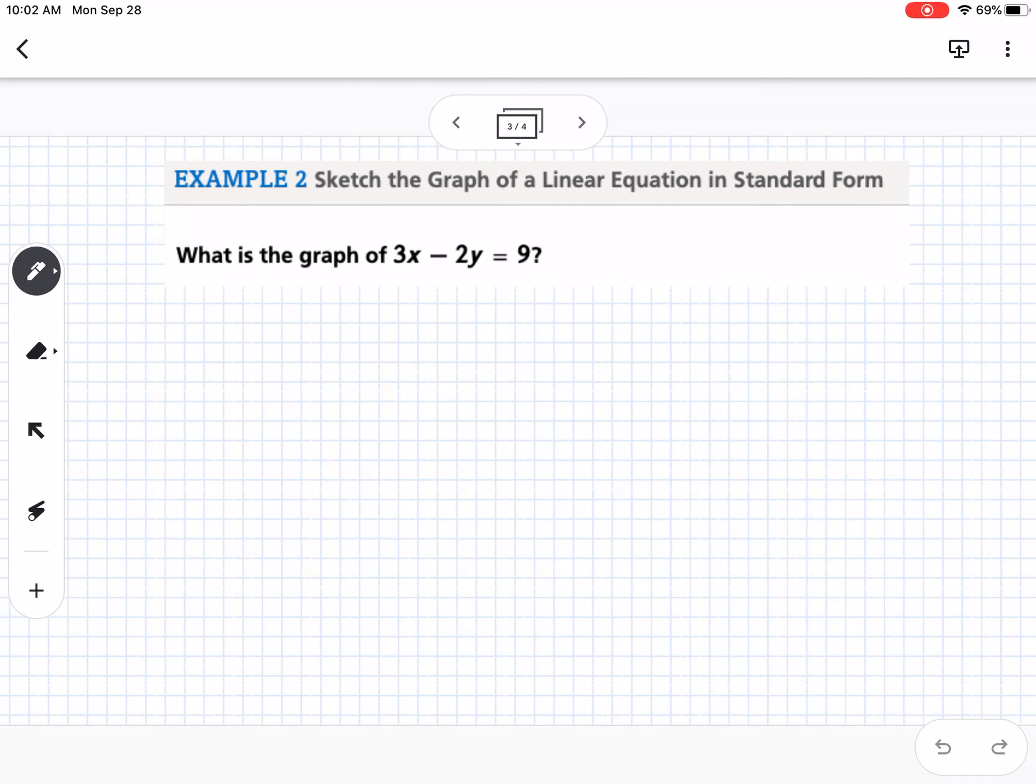The next thing is, how do we graph when we're in Standard Form? One way you could do it is you could solve for your Y value and put it into slope intercept. But there's another easier way, and it's called the cover-up method. So I'm going to rewrite this down here.